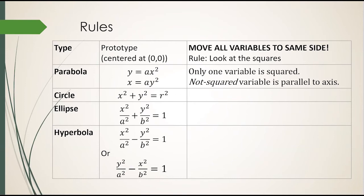If only one variable is squared, it's a parabola. The variable that's not squared is parallel to the axis.